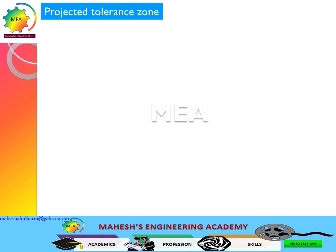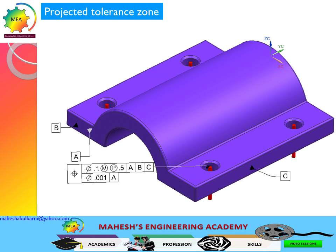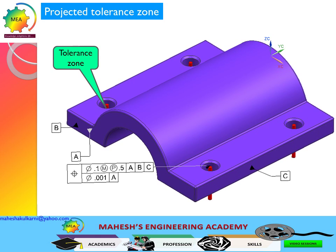Let us understand the interpretation of the projected tolerance zone. The red cylinder represents the tolerance zone of diameter 0.1 units — the cylindrical tolerance zone. Observe that the tolerance zone is projected from the surface by 0.5 units.